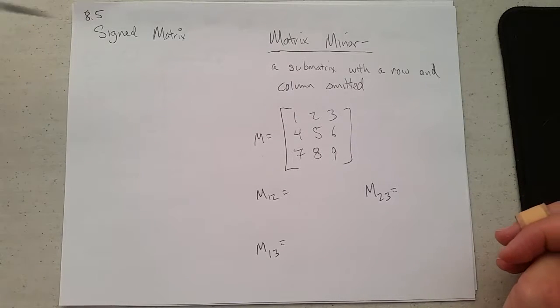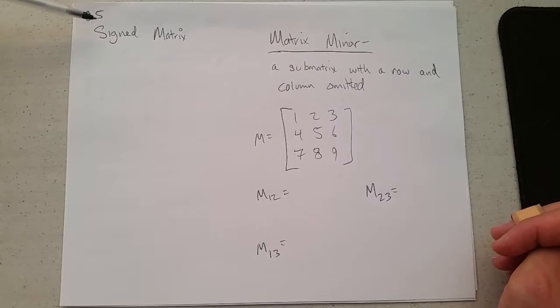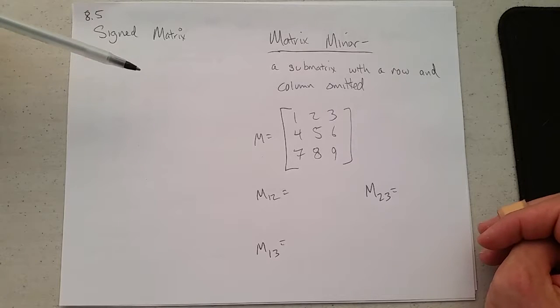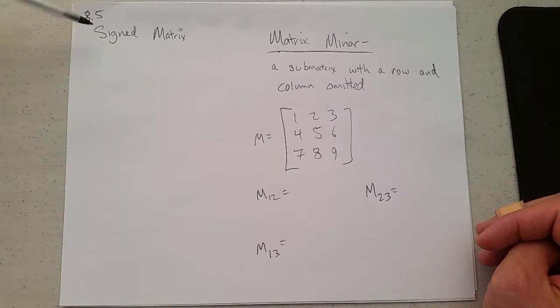Computing a bigger determinant, like a 3 by 3, 4 by 4, 5 by 5, there's not a nice formula. Well, there is a formula, but it's not nice. So we're going to do a row expansion, and in order to do that, we need to know about sine matrices and minors.